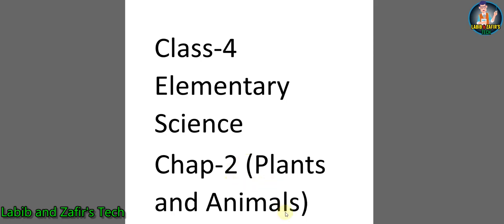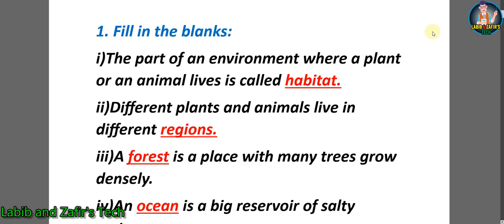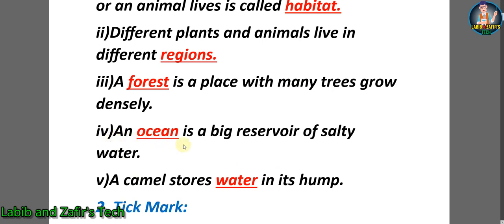Chapter Two: Plants and Animals. Let's go through some fill in the blanks. Number one: the part of an environment where a plant or an animal lives is called habitat. Number two: different plants and animals live in different regions. Number three: a forest is a place where many trees grow densely. Number four: an ocean is a big reservoir of salty water. Number five: a camel stores water in its hump.